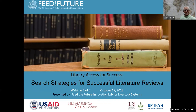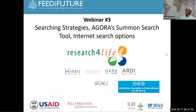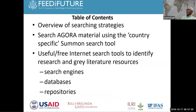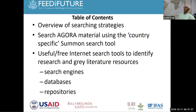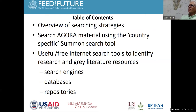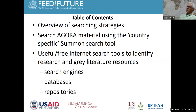We're going to briefly look at a table of contents covering search strategies, which should be pretty routine. Then we'll go back to Agora, the FAO and publisher partnership that grants access to journals, ebooks, and other resources in 106 countries and territories. We'll also look at useful free internet search tools to identify research and literature resources — a couple of search engines, databases, and repositories — and do some demos as we go through the process.